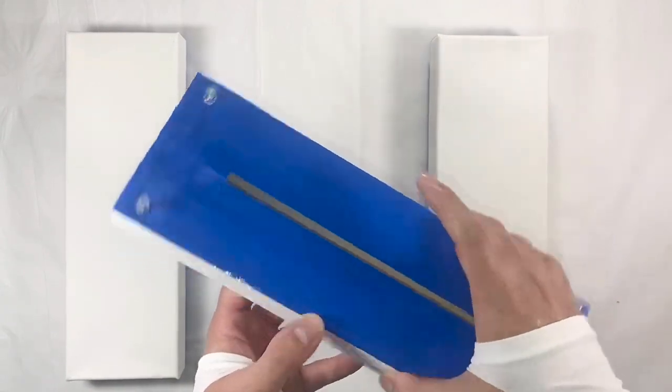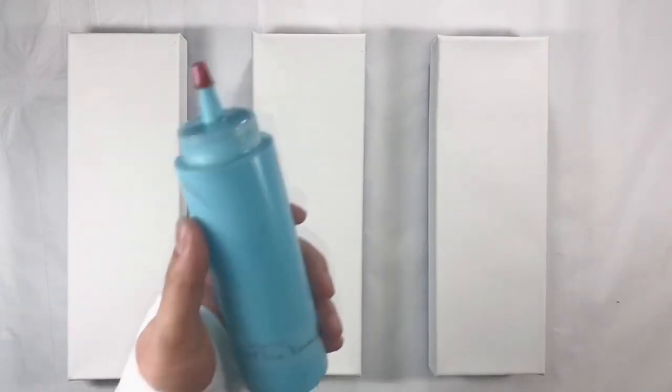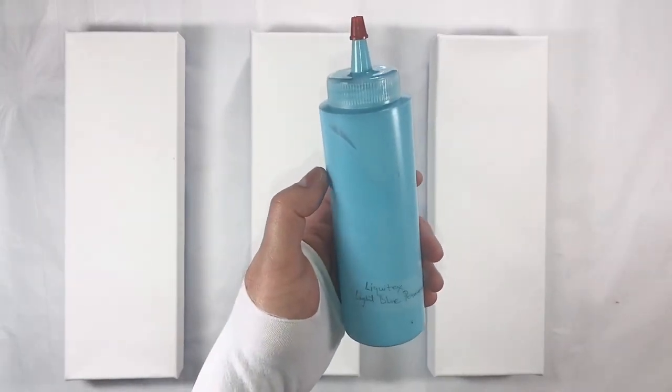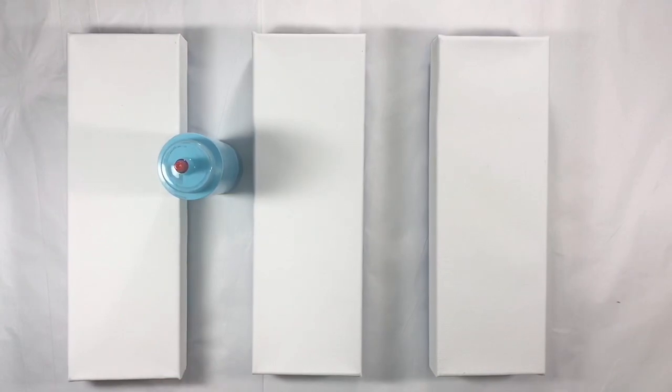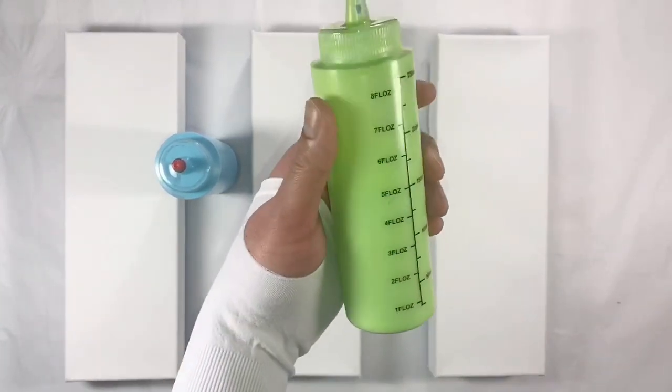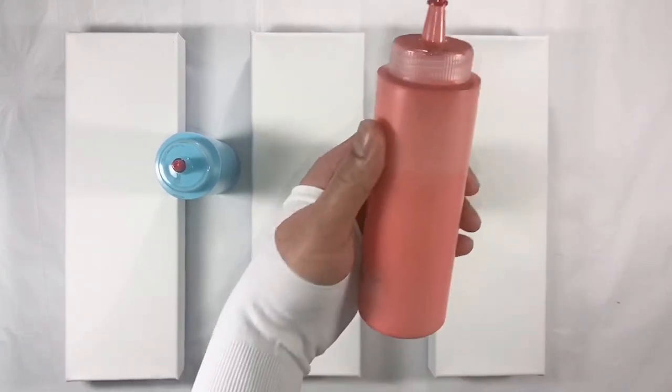Let me introduce you my colors. These are my three main colors. The first one is Liquitex light blue permanent which goes for this canvas, and the second one is Liquitex brilliant yellow green, and the third one is DecoArt coral blush.